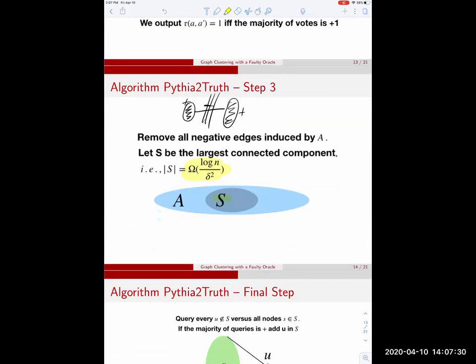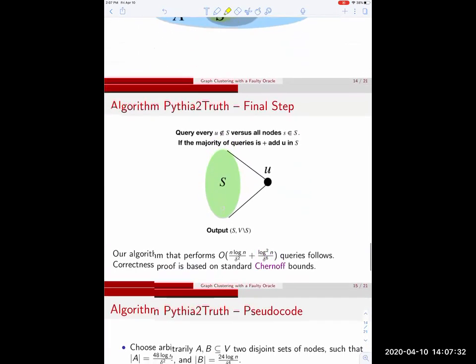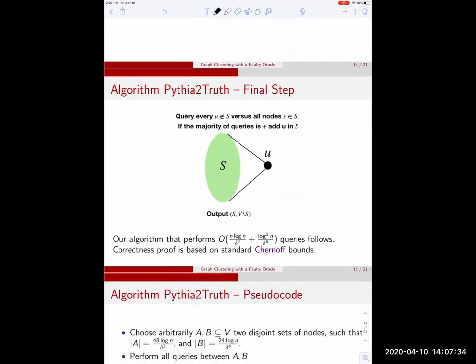We take this set and we call it S. Finally what we do, we take every node U which is not in S, we perform all queries between U and S. If the majority is plus one, we decide that U belongs to the same cluster like S. We don't add it there, we just keep S fixed, but we decide that U and the nodes inside here belong to the same cluster. If the majority is minus, we say U does not belong to the same cluster as nodes in S.